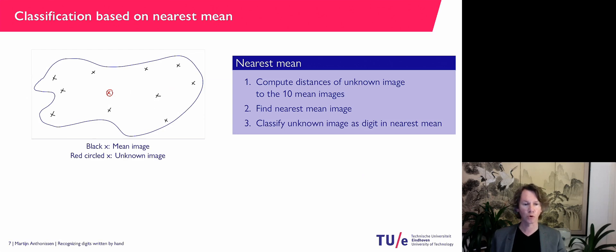So let's see how that works. Probably, you can already expect what we're going to see. It's going to be faster, because for an unknown image, I only have to compute 10 distances now, only to the averages.